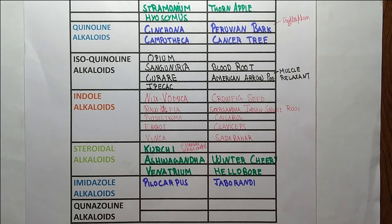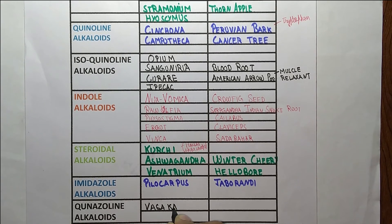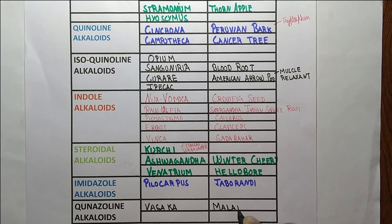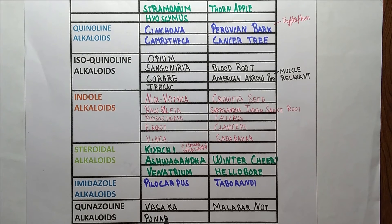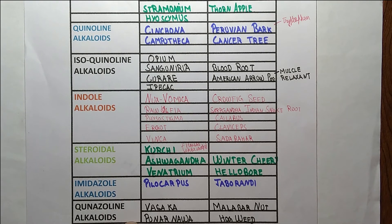Next is quinazoline alkaloids. There are two drugs: the first is vasaka — its synonym is 'Malabar nut' — and the next one is punarnava — its synonym is 'hogweed.' So vasaka and punarnava are the two drugs in quinazoline alkaloids, with Malabar nut and hogweed as their respective synonyms.